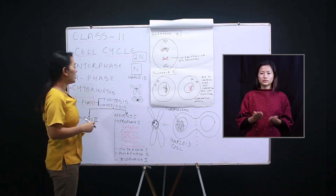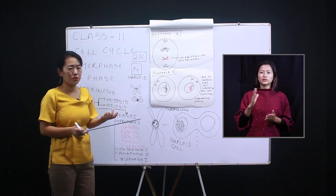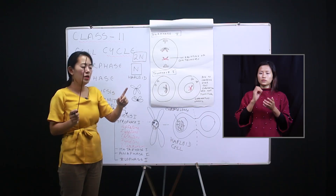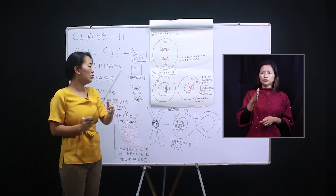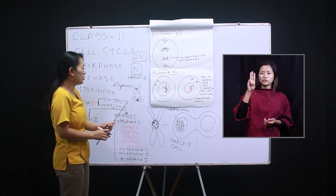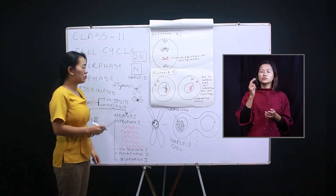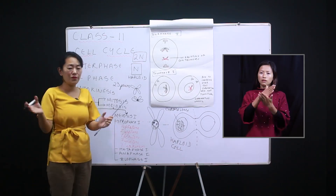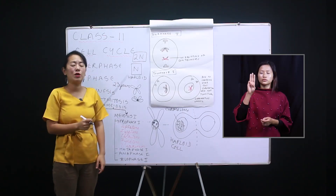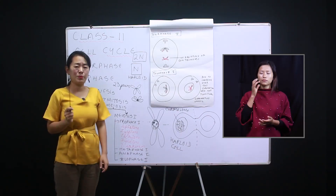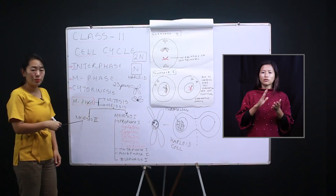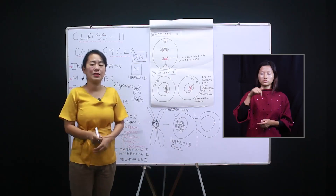They will then move to meiosis two, which we'll study in the next class. The main importance of meiosis is that we need haploid chromosomes from both the father and mother. A human being has 23 pairs of chromosomes — half come from the father and half from the mother, making 23 pairs together. That's why it is very important for the ovum and sperm to be haploid.